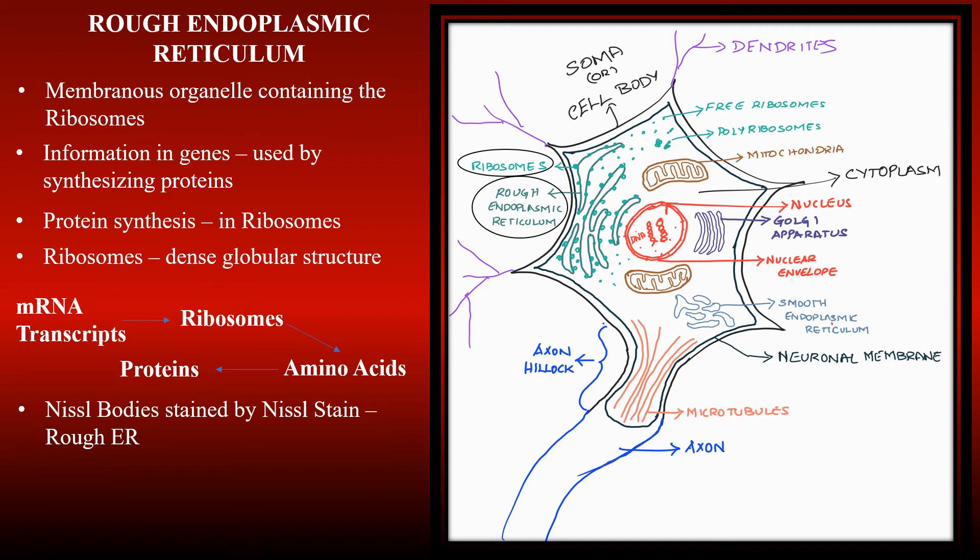In the previous video about neuron doctrine, we saw that the Nissel stain stains Nissel bodies around the nucleus. These are nothing but a stack of membranous organelles called the rough endoplasmic reticulum. The number of rough endoplasmic reticulum in the neuron are higher compared to other cells. This is because of the need to synthesize many membrane proteins that are involved in neurons' information processing and communication.